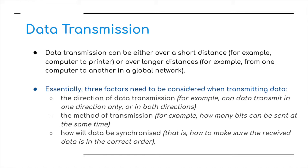Essentially, three factors need to be considered when transmitting data. First, the direction of data transmission — for example, can data transmit in one direction only, or does it need to be in both directions? Secondly, the method of transmission — for example, how many bits can be sent at the same time? And finally, how will data be synchronized, that is, how to make sure the received data is in the correct order?